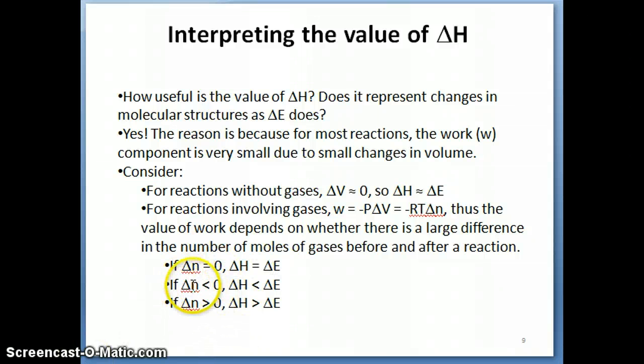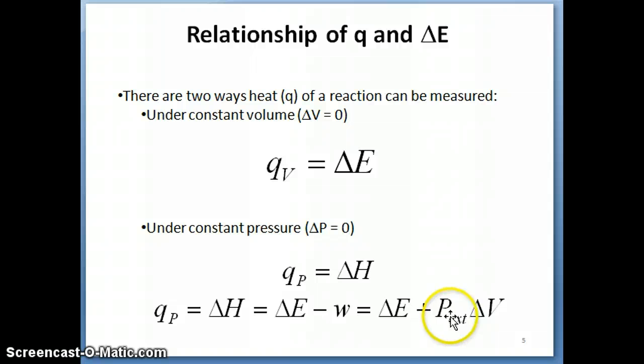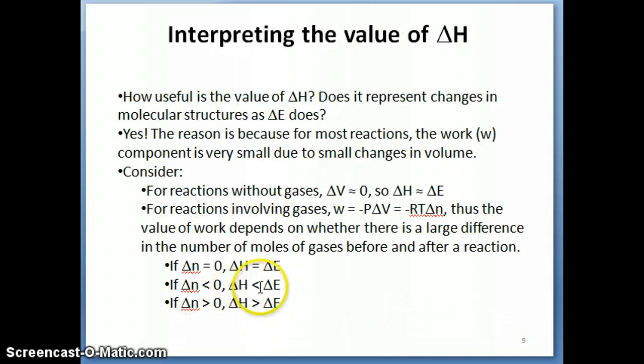If, on the other hand, you have your delta n less than zero, and so what that means is you start with more gas in the reactant, and then you produce fewer gas in the product. In that case, what you have is delta n being a negative number. If delta n is a negative number, if we put it all together into the equation originally here, that means that this whole thing becomes a negative number. If that's a negative number, then that means your delta H is less than your delta E. So that's the conclusion that's given here.